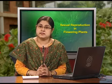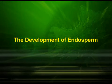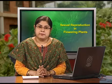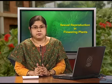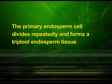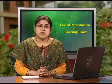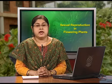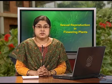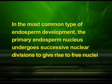Let us discuss the development of the endosperm. Endosperm development happens before embryo development. The primary endosperm cell divides repeatedly and forms a triploid endosperm tissue. The cells of this tissue are filled with reserved food materials and are used for the nutrition of the developing embryo. In the most common type of endosperm development, the primary endosperm nucleus undergoes successive nuclear divisions to give rise to free nuclei.